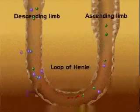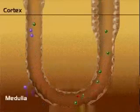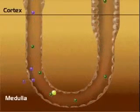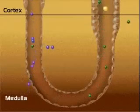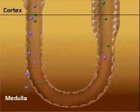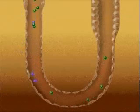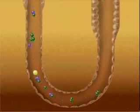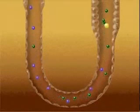The loop of Henle dips from the cortex of the kidney into the medulla and is surrounded by the medullary interstitial fluid. The countercurrent multiplication system is responsible for not only elevating the concentration of urine in the loop, but more importantly, it elevates the concentration of the interstitial fluid as well.